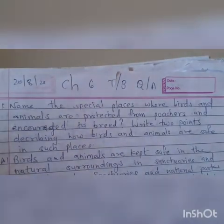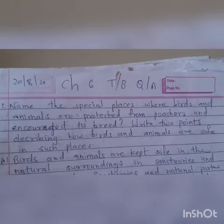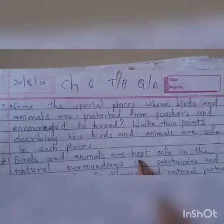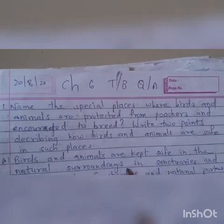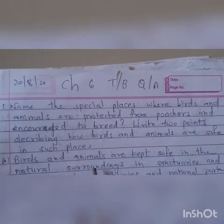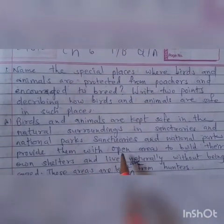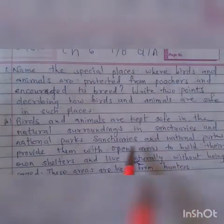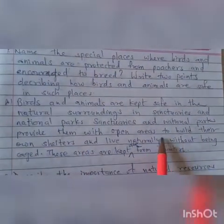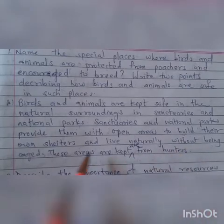In these places, no one can hunt the birds or animals, so they are safe here. Birds and animals are kept safe in the natural surroundings in sanctuaries and national parks. Sanctuaries and national parks provide them with open areas to build their own shelters and live naturally without being caged.